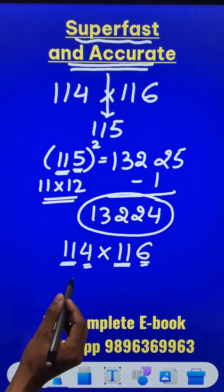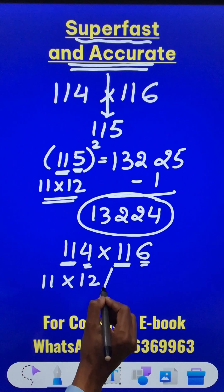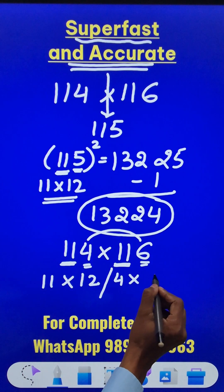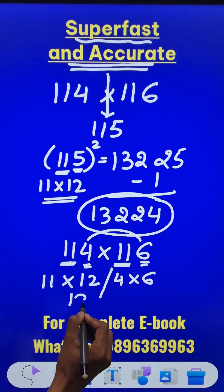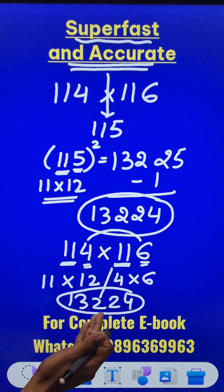you just take the remaining part 11 and multiply it by the consecutive number 12, and take the product of the unit digits 4 times 6 to get your answer. This is 132 and this is 24. Isn't that amazing? The same answer.